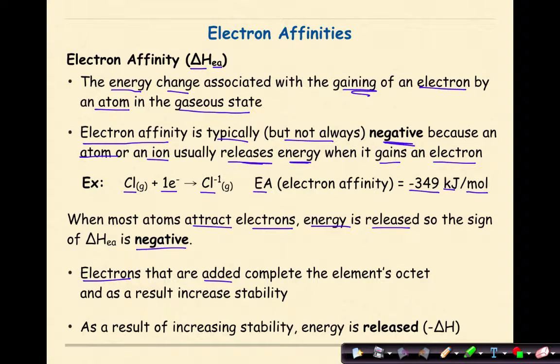Electrons that are added complete the element's octet and as a result increase stability. As a result of increasing stability, energy is released, and again we see a negative delta H.